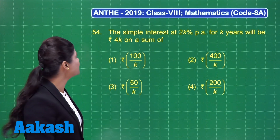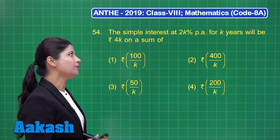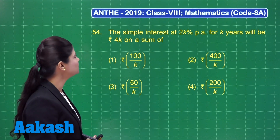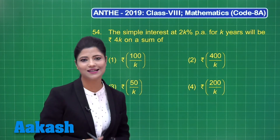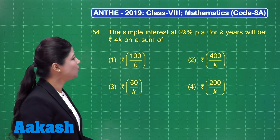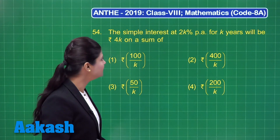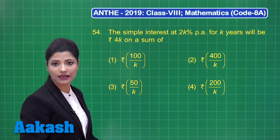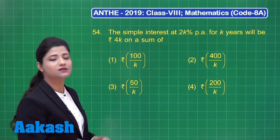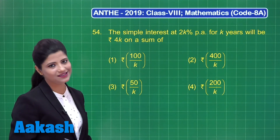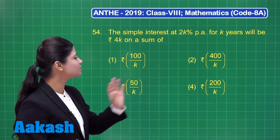Let us take up question number 54, which states that the simple interest at 2k percent per annum for k years will be rupees 4k on a sum from these four options. This is a question related to simple interest where the rate of interest is 2k percent per annum, the time period is k years, and the simple interest earned is 4k. We do not know the principal, so the principal will be one of these four options. Let us consider the principal to be rupees x.